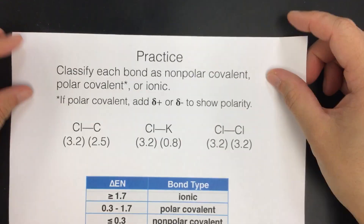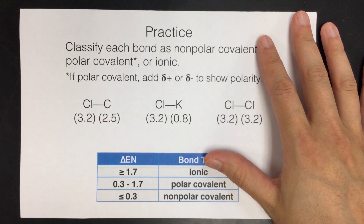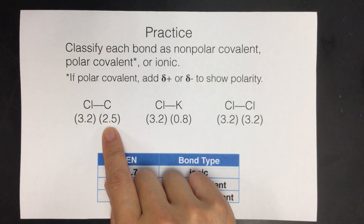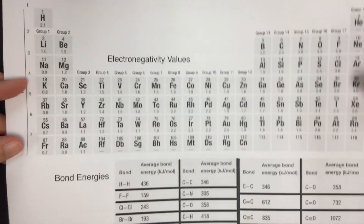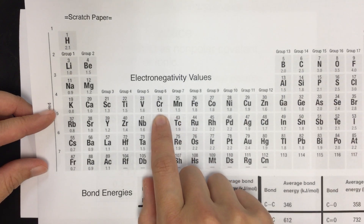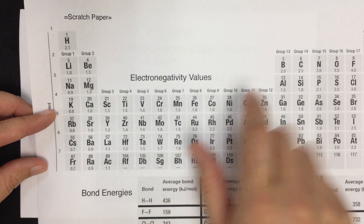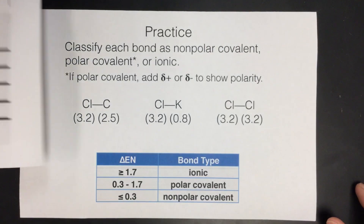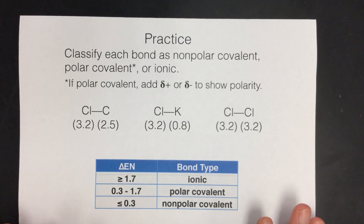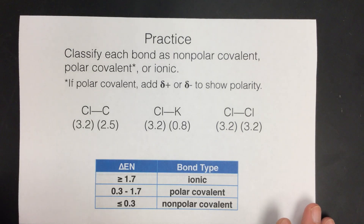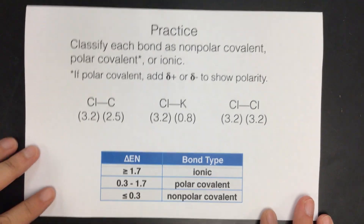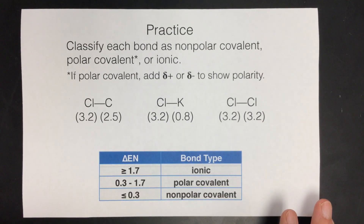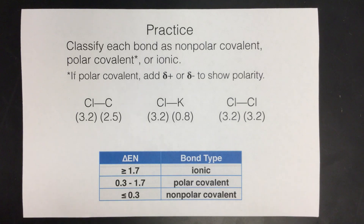When we use this to figure out problems, you'll either be given electronegativity values or use a table, and you subtract them to find the difference. In this particular problem from the notes, it gives us the values. We classify each bond as nonpolar covalent, polar covalent, or ionic. If it's polar covalent, you do an extra step and identify which atom is slightly positive and which is slightly negative to show the polarity.